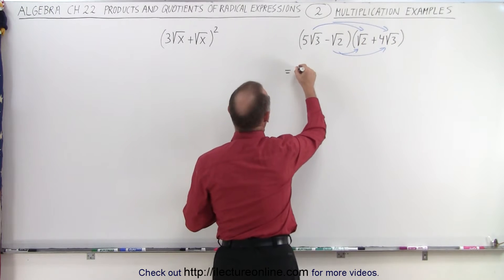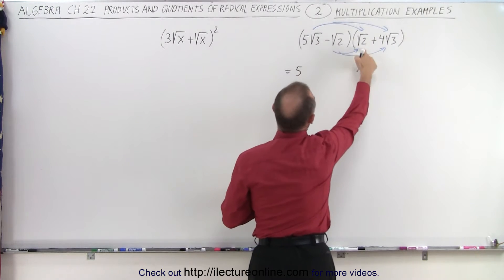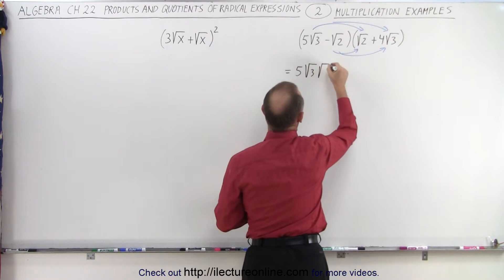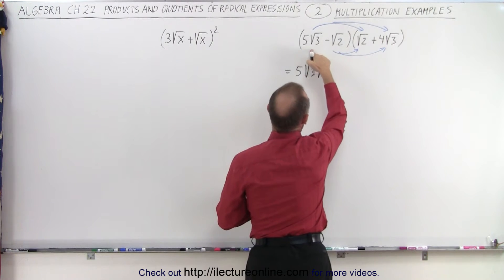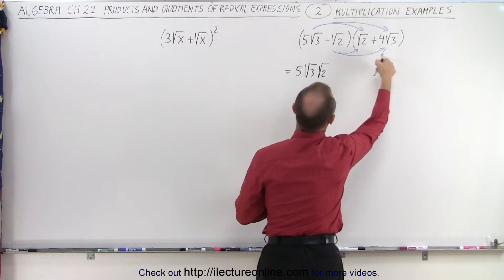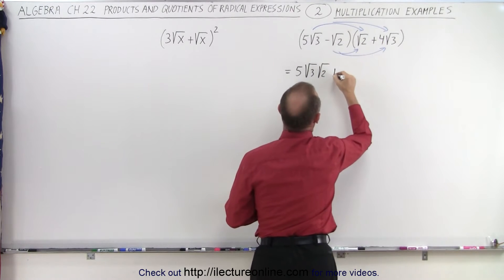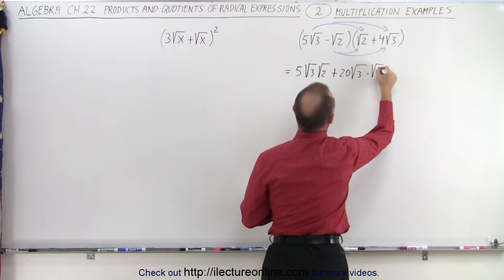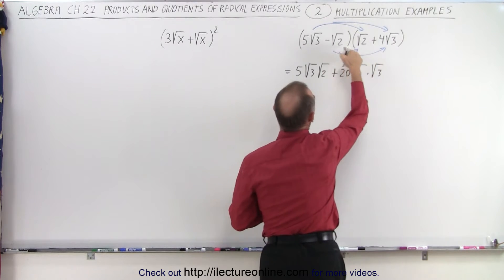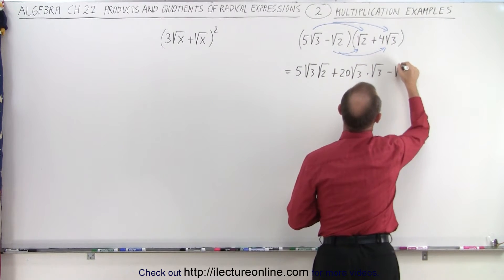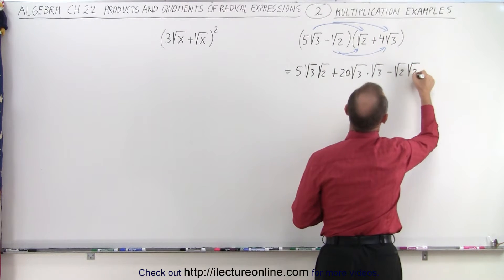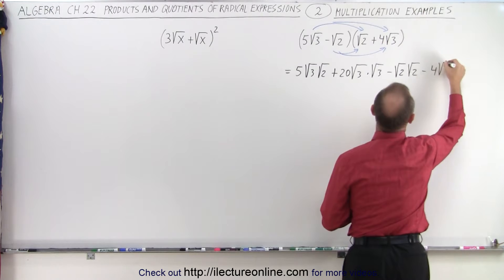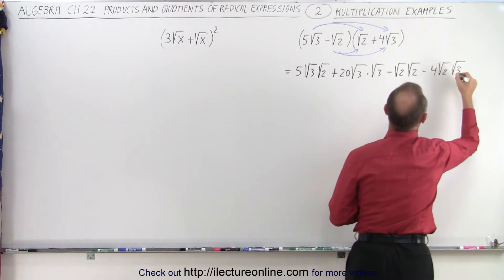So this is equal to five times the square root of three times the square root of two. And then we multiply this times this, so we get five times four, which is 20 times the square root of three times the square root of three. Then we multiply these two together — that's minus the square root of two times the square root of two. And multiply these two together, that would be minus four times the square root of two times the square root of three.